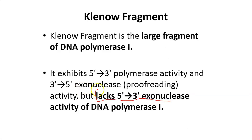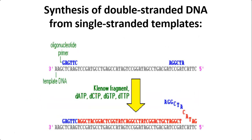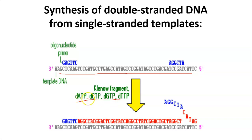To summarize: DNA Polymerase 1 is a template-dependent DNA polymerase that catalyzes 5' to 3' synthesis of DNA. It also has 3' to 5' exonuclease (proofreading) activity and 5' to 3' exonuclease activity. The Klenow fragment is the large fragment of DNA Polymerase 1, retaining 5' to 3' polymerase activity and 3' to 5' exonuclease (proofreading) activity, but lacking the 5' to 3' exonuclease activity.